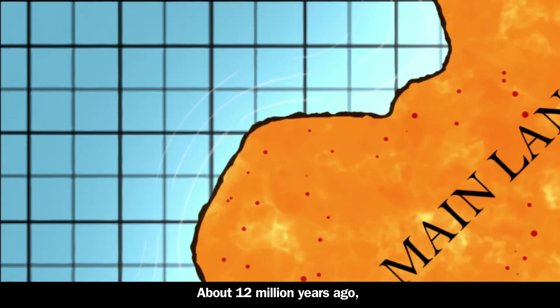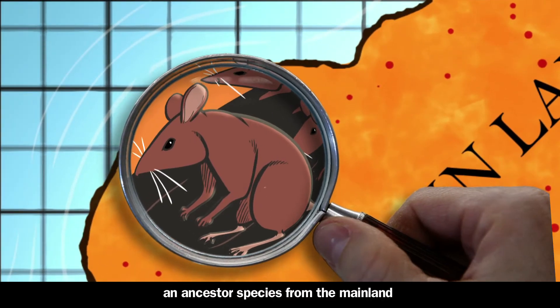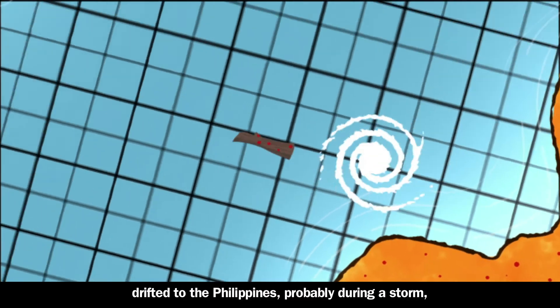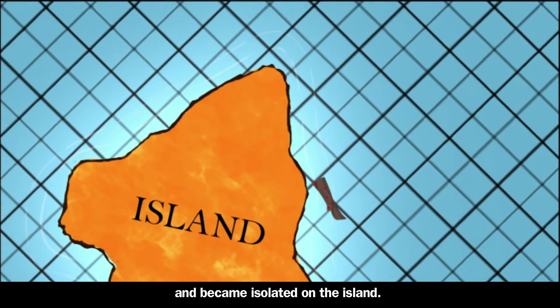one big reason is that islands are isolated from other areas. About 12 million years ago, an ancestor species from the mainland drifted out to the Philippines, probably during a storm, and became isolated on the island.